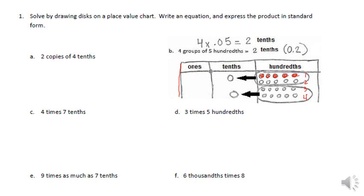And we know when we count them up, if we have ten hundredths, that equals one tenth. And here we have ten more hundredths, that equals one tenth. So four groups of five hundredths equal two tenths. And this is how it's written in standard form.